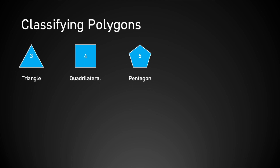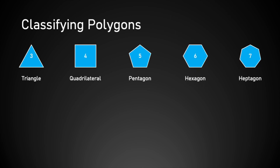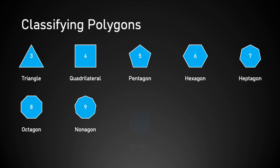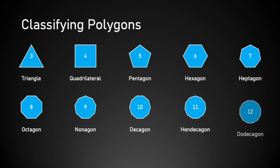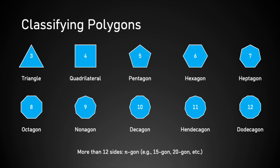Six sides is a hexagon and seven is a heptagon. You can stop drawing these when you get to six — they get a lot harder to draw after that. But here are the additional names you'll be expected to know: an eight-sided polygon is an octagon, a nine-sided polygon is called a nonagon, and then we have a decagon, a hendecagon, and a dodecagon. If there are more than 12 sides, we just call it an n-gon, where n is the number of sides. So a 15-sided polygon would be called a 15-gon, a 20-sided polygon is a 20-gon, and so on.